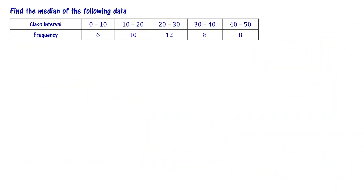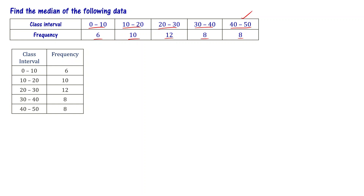Find the median of the following data. Class intervals: 0–10, 10–20, 20–30, 30–40, 40–50. Frequencies: 6, 10, 12, 8, 8. Total frequency N = 6 + 10 + 12 + 8 + 8 = 44. So N/2 = 44/2 = 22.